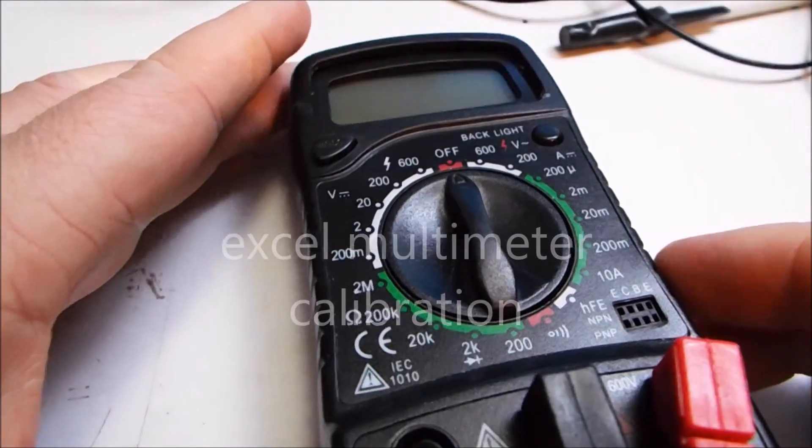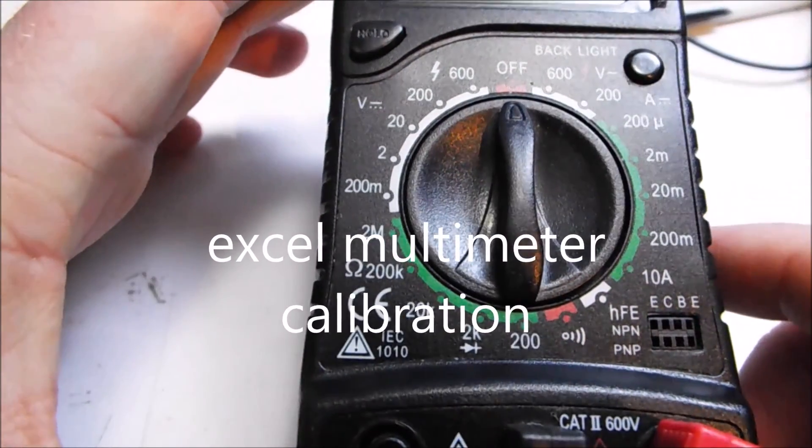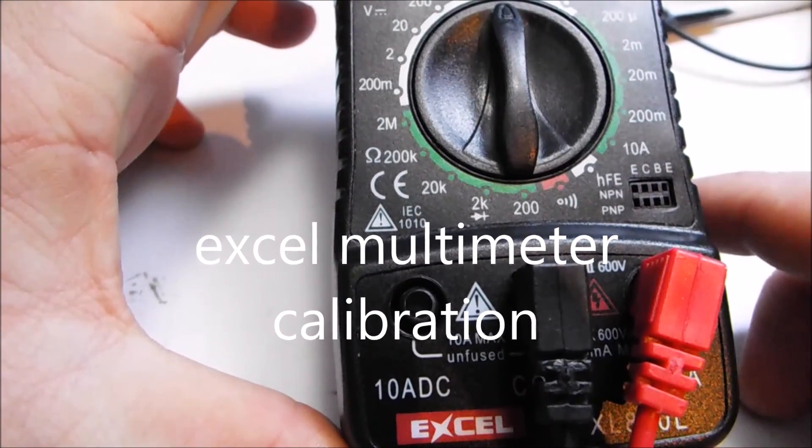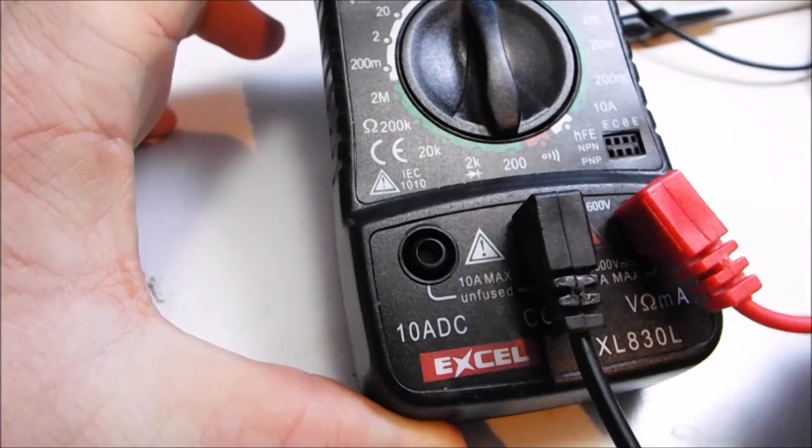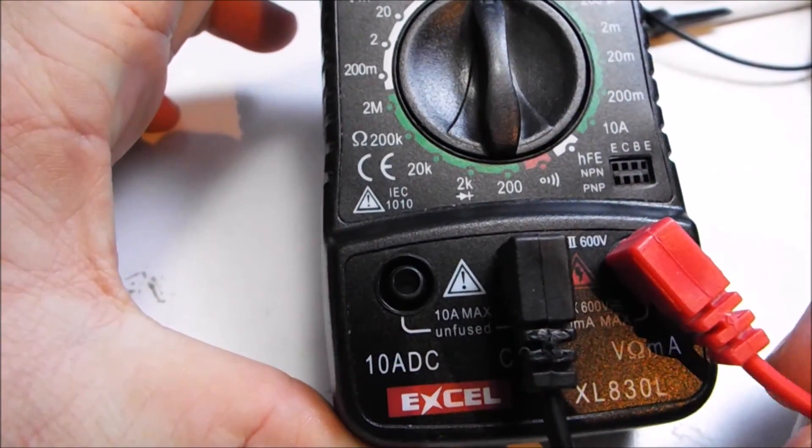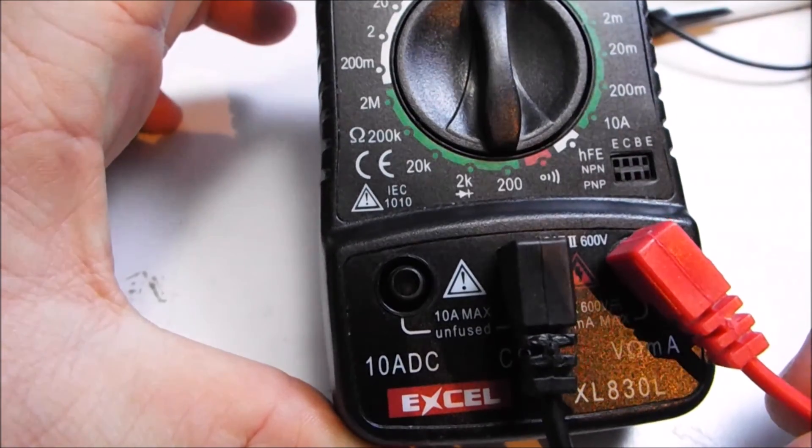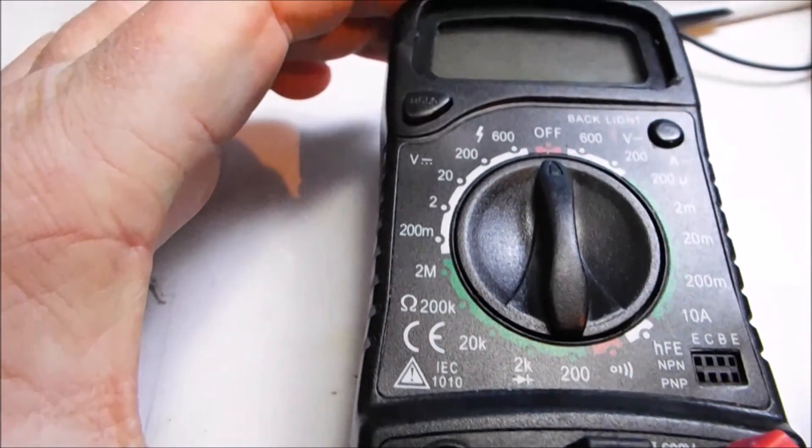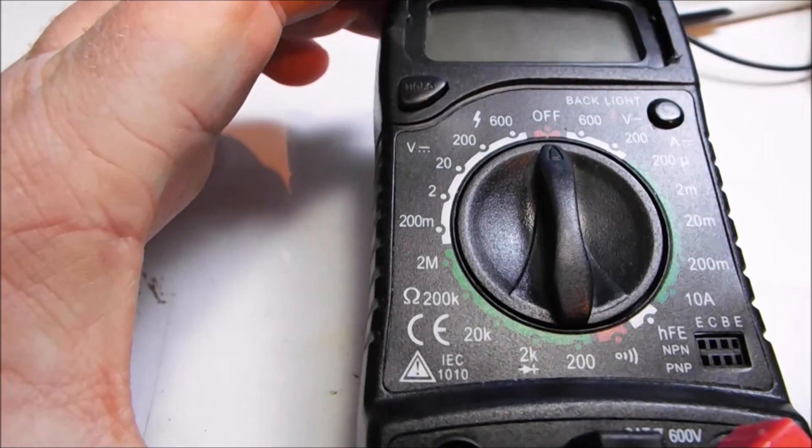Hey everyone, it's Chris here from Everyday Survival Gear. I'm just going to show you how to calibrate your XL multimeter, this is XL830L. I've seen a lot of these on eBay and whatnot.